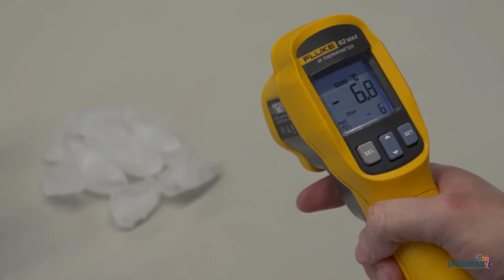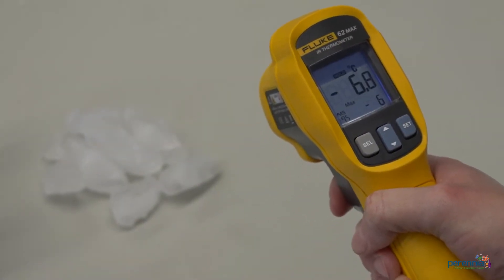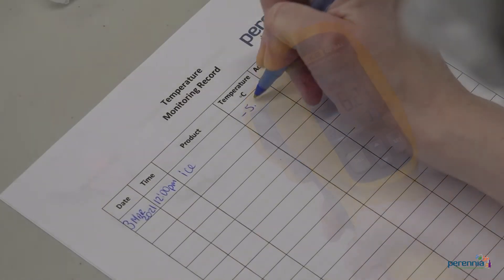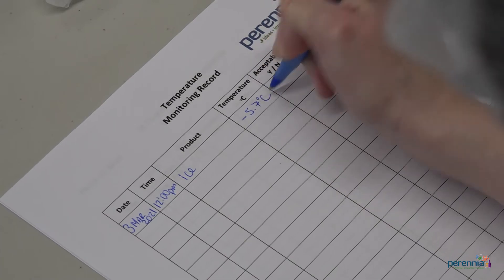Step two, point the thermometer at the object you wish to take the temperature of and pull the trigger button. Step three, record the results on your monitoring record.